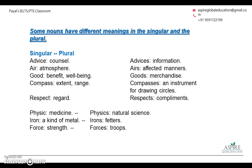Good is an adjective meaning benefit; goods is a noun meaning merchandise. Compass means range; compasses is a noun meaning an instrument for drawing circles. Respect is a verb meaning regard; respects can be a verb or another part of speech depending on usage, but it can mean compliments. Iron is a metal; irons means fetters. Physics is natural science; forces means troops.